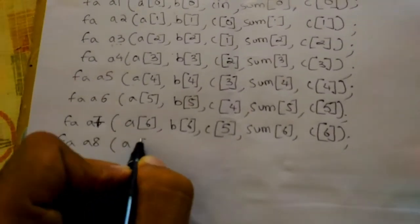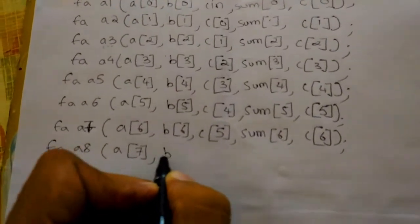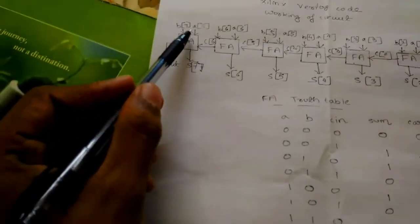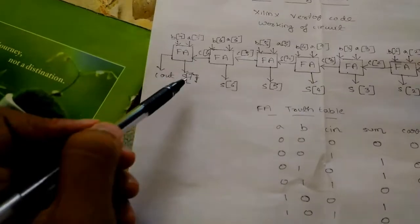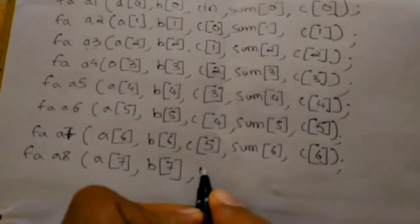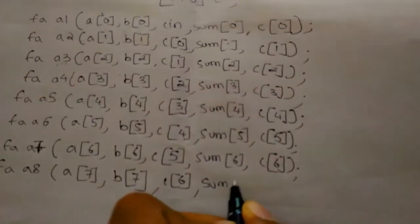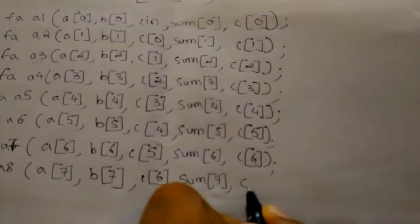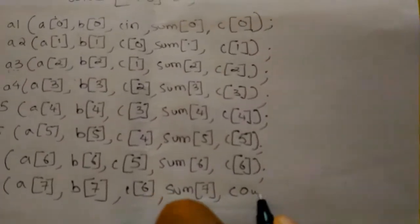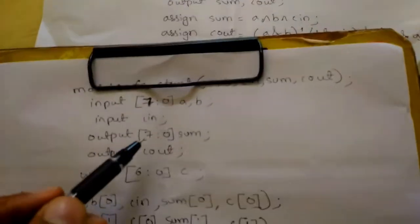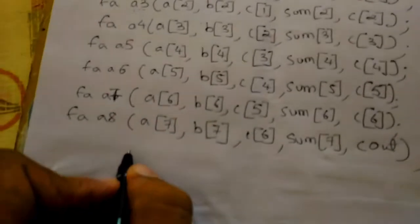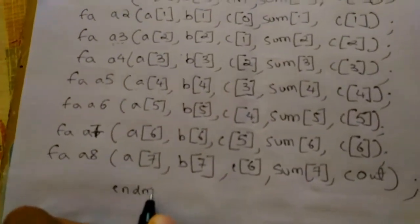Next full adder a8, a7. Now this is the last full adder, so the inputs are a7, b7, c6. Outputs are sum7 and cout. Therefore I will be writing sum7 and not c7, but cout. That is the last output. Now we will be writing end module.